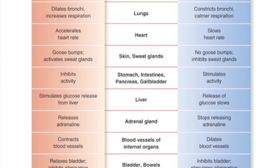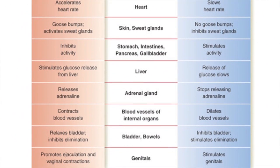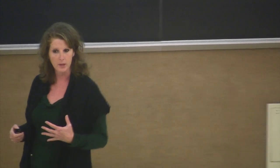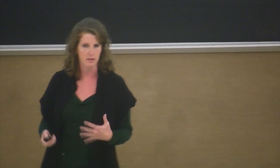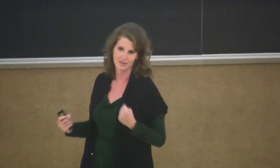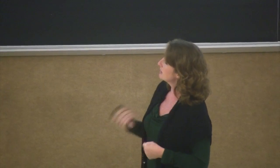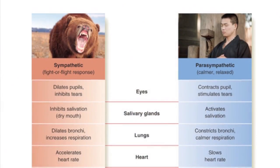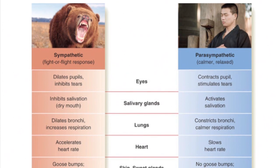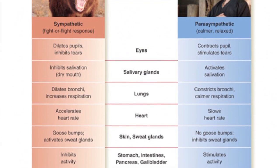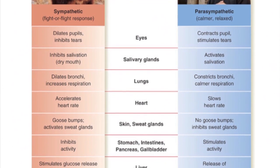Imagine that you're faced with a danger — you're walking into class and a bear runs at you. All kinds of things happen to your body automatically, and this is regulated by the autonomic nervous system. All of these things happen so you can either prepare to fight that bear or get out of there. Different things happen with your eyes, for example — your pupils will dilate. Your salivary glands are activated to inhibit salivation.